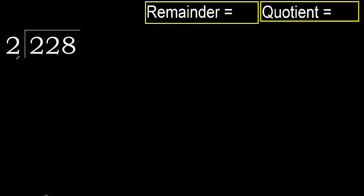228 divided by 2. 2 is not — let's start therefore with 2. Here, 2 multiplied by which number is nearest to 2, but not greater?